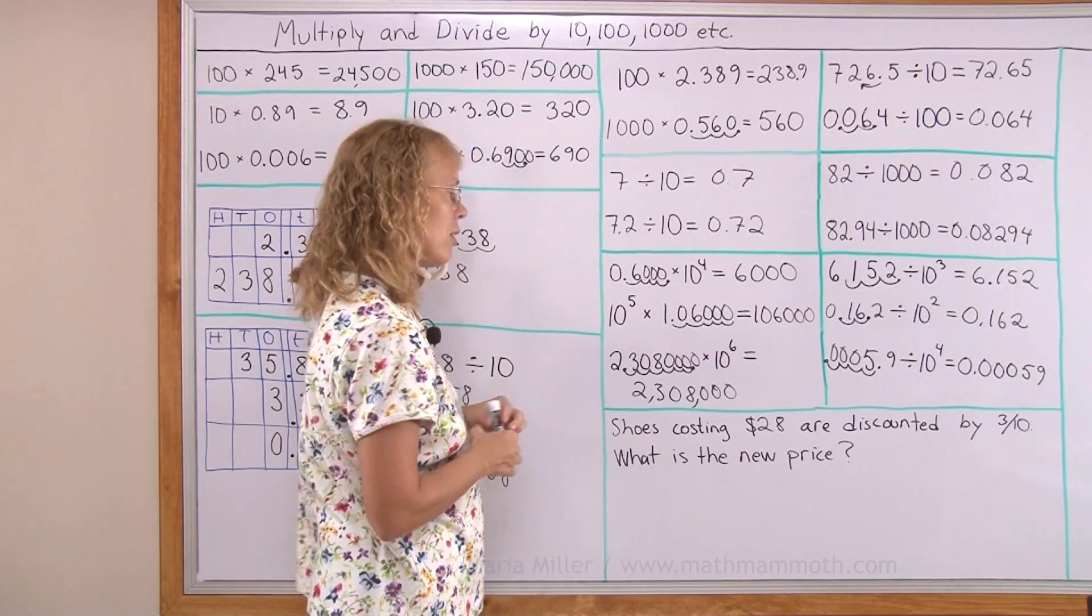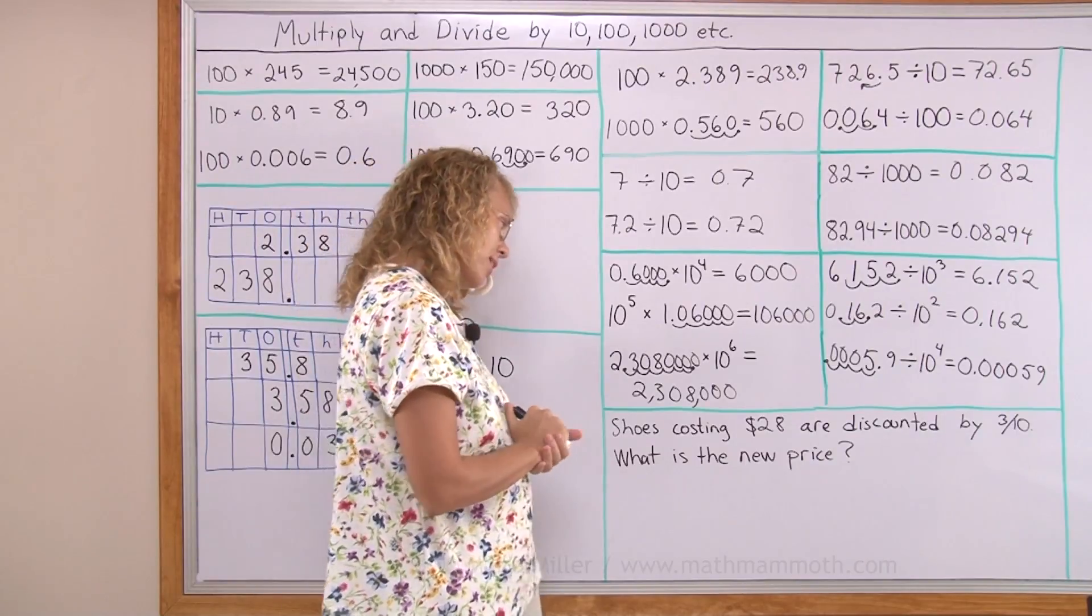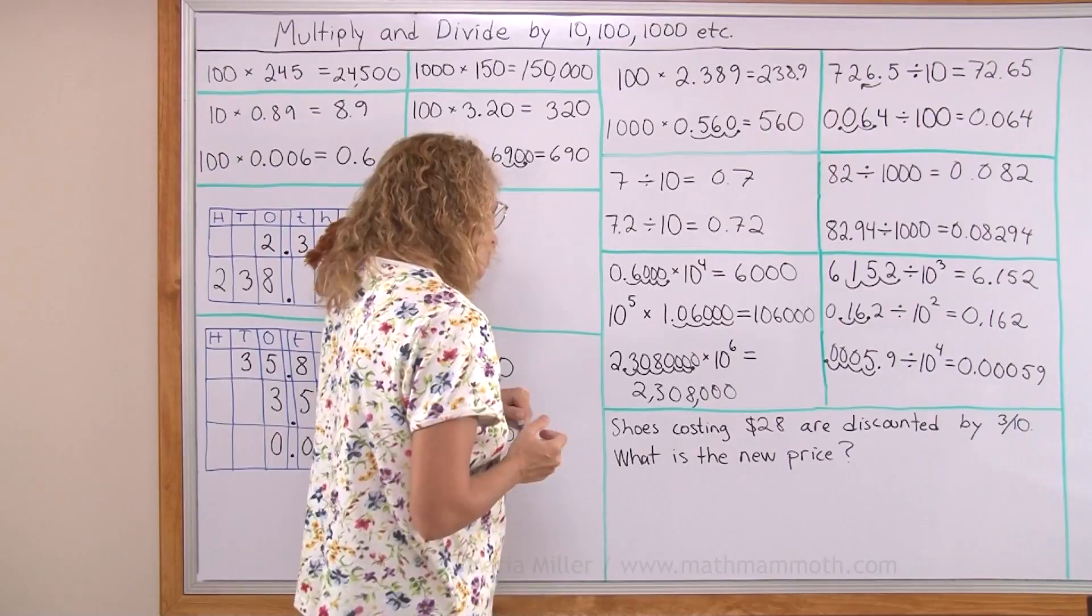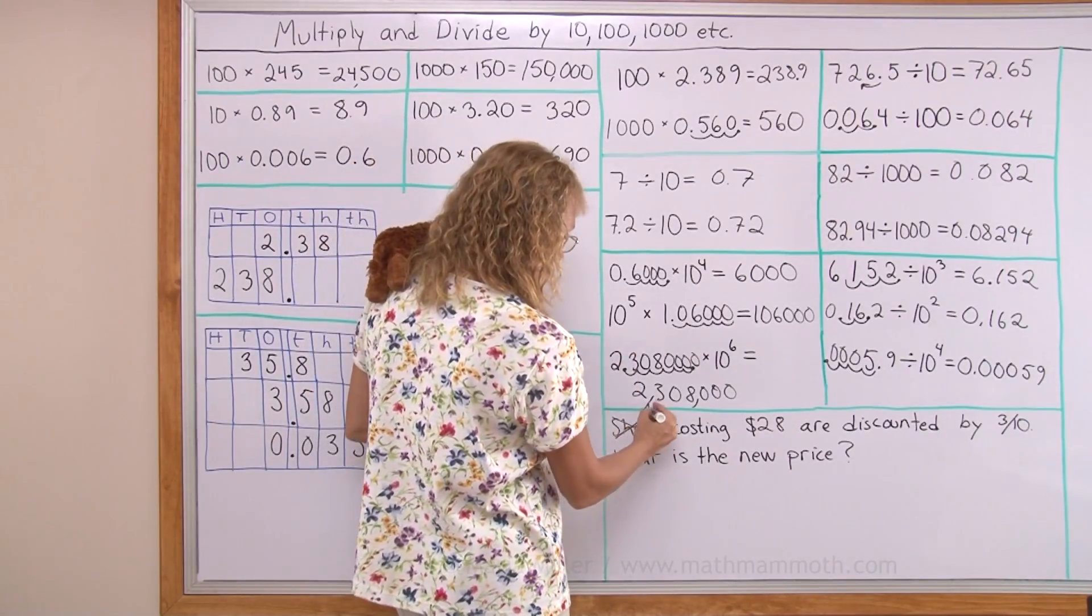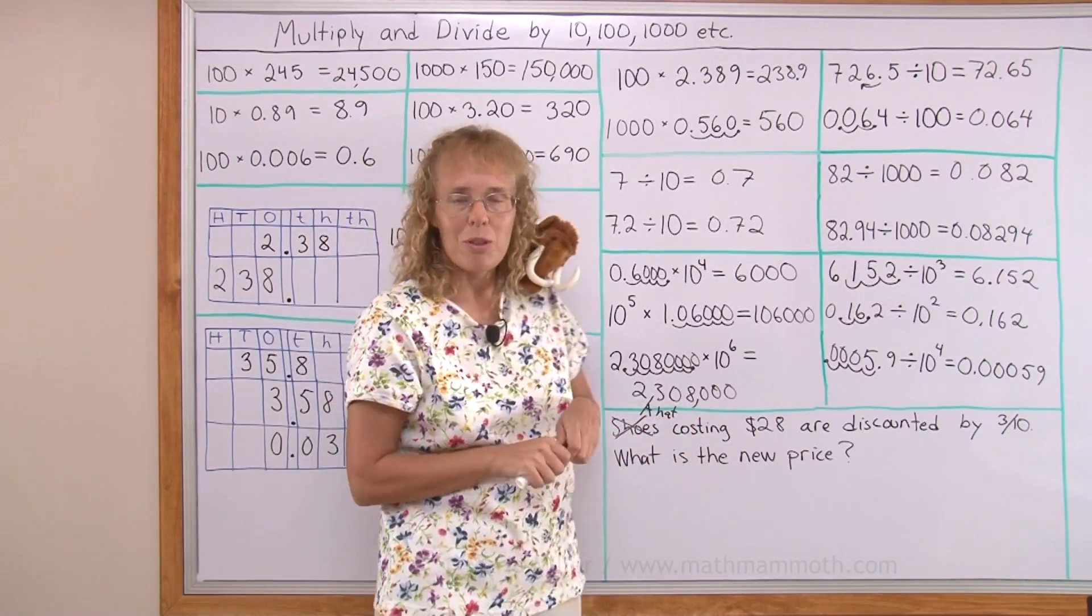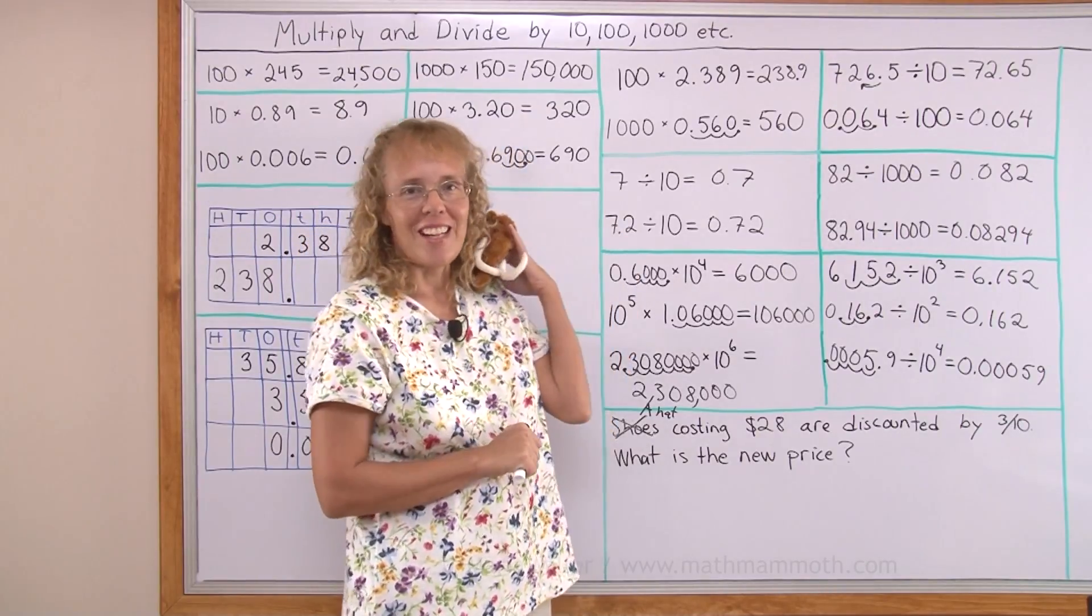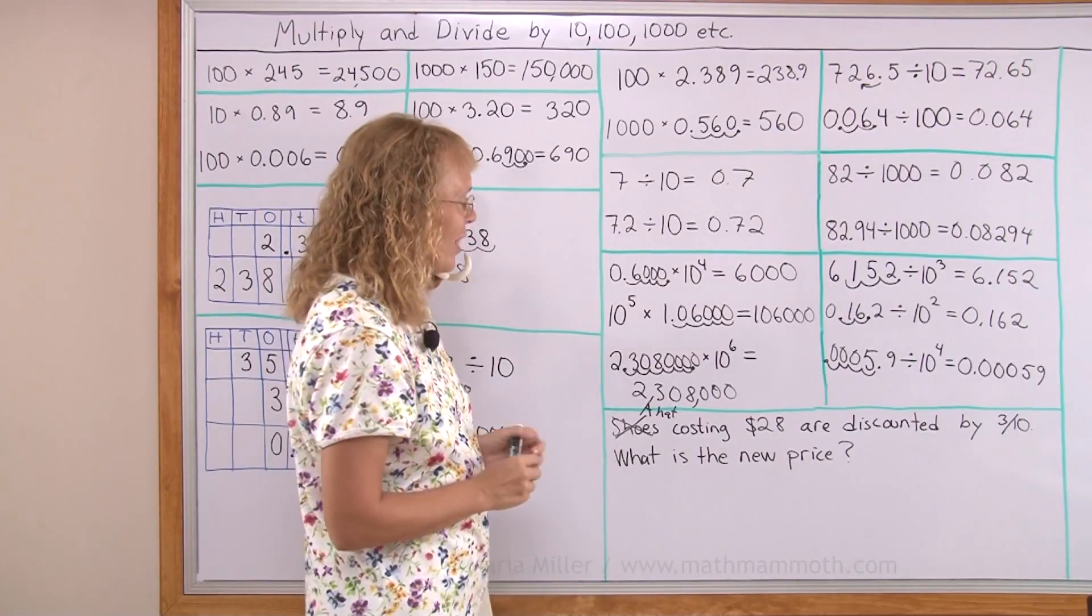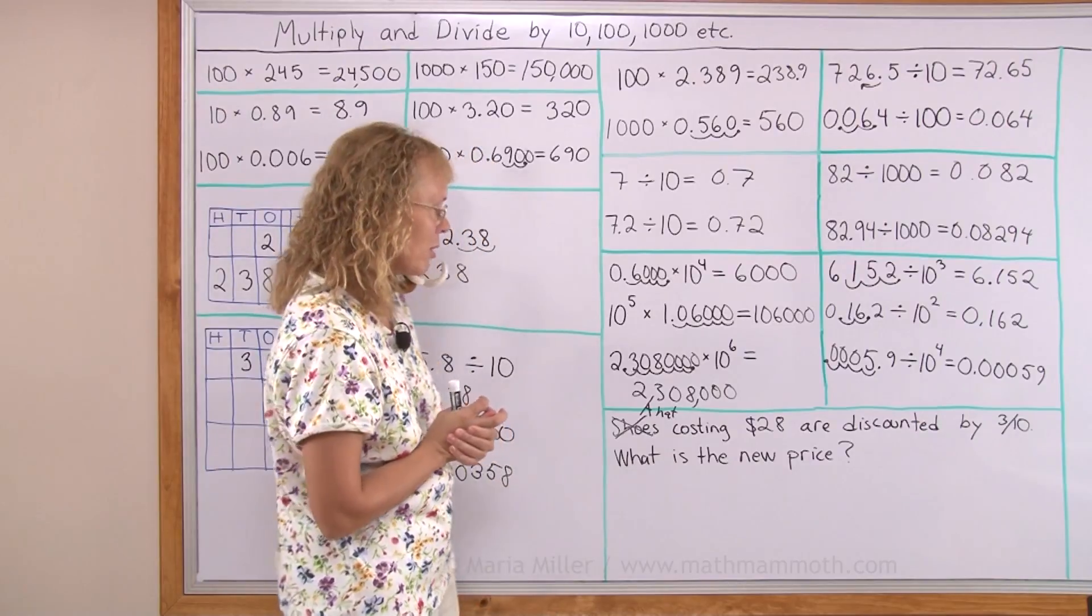Lastly, shoes costing $28 are discounted by three tenths. What's the new price? What's that, Matthew? He doesn't like my word problem. He says, please change it to a hat. Why? I can. Yeah, a hat. Why a hat? Because mammoths don't wear shoes, but he might consider wearing a hat. All right. Happy now, Matthew? It's a hat. Now, a hat is discounted by three tenths of its price. What is the new price?